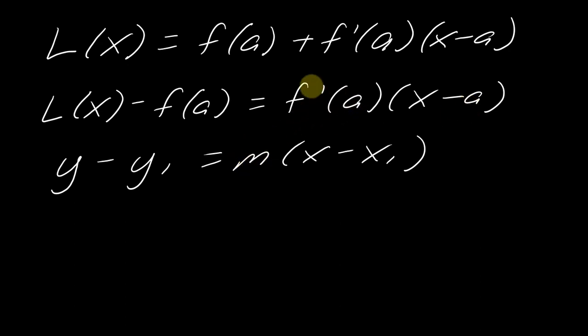So if I plug a into the derivative, that gets me the slope of the line. So the linearization, it's got the word line in it, and it literally is a line. So this equation actually is related to the point slope form, if it's easier for you to remember that.